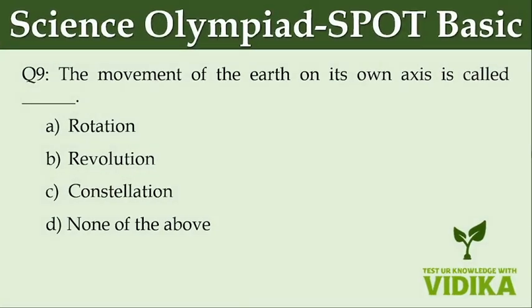The movement of the Earth on its own axis is called dash. Option A: rotation. Option B: revolution. Option C: constellation. Option D: none of the above.